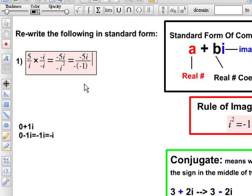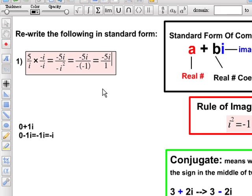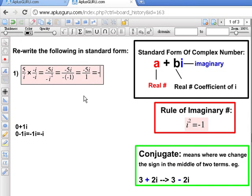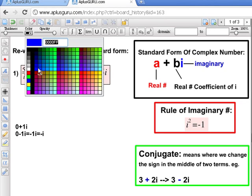So you notice that i squared changed into negative 1, because there is still a negative outside, so it becomes negative of negative 1, which would equal to negative 5i in the numerator, and positive 1 in the denominator, because negative times the negative is positive, which would equal to negative 5i, because negative 5i over 1 would equal negative 5i. Any number that is divided by 1 would equal to the number that was in the numerator.